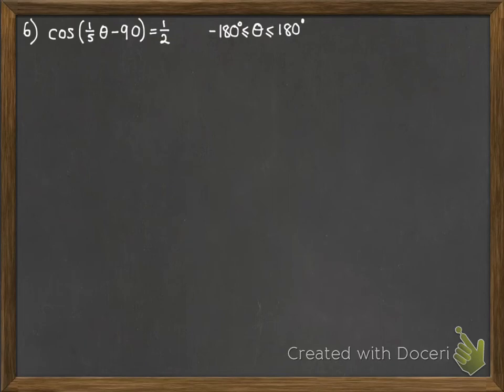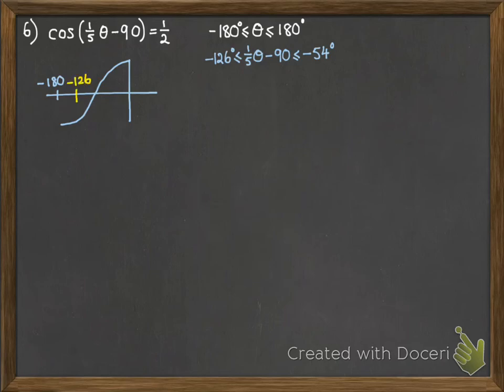A bit more complex now. We've got cos of (θ/5 - 90) equals 1/2. So let's adjust the range that we need to look at. We'll do a fifth of 180 and take away 90 to get our end values. So thinking about the graph, we're just looking in this particular range here between -126 and -54. So inverse of 1/2 gives us this value here.